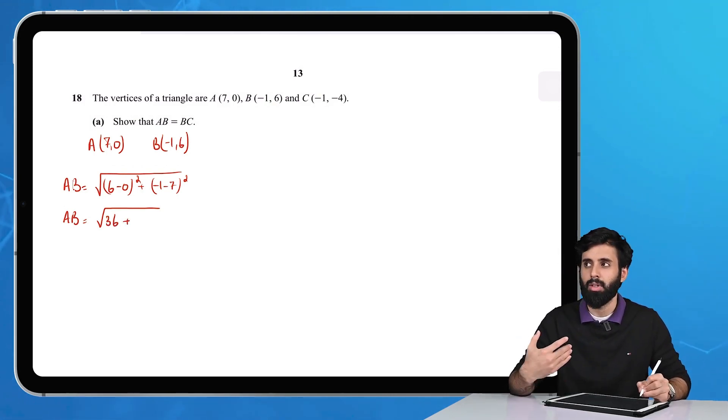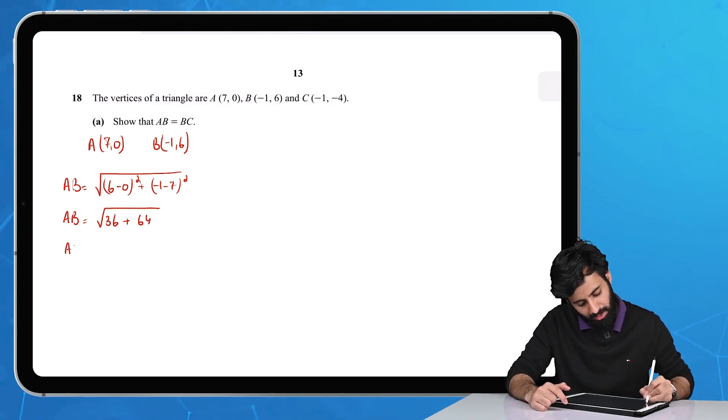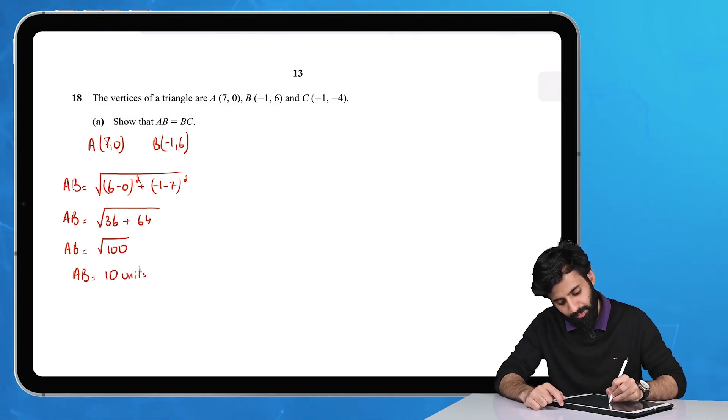That's 36 plus 64, which equals 100, and the square root of 100 is 10 units.